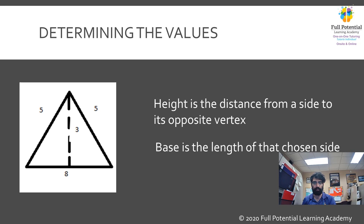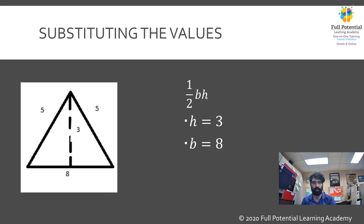We can replace the value of h in the equation with 3. The base of a triangle is the side which is connected to the vertex by our imaginary line. The base of this triangle would therefore be 8.